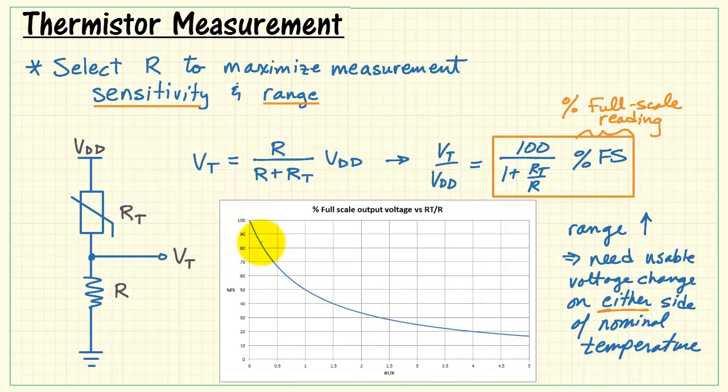As an example, suppose the fixed value resistor is selected to be much larger than the thermistor resistance at its nominal temperature. Well, that gives us this asymmetrical output range, meaning that as the temperature swings back and forth around the nominal temperature, we have a fairly limited range as it tries to go in the colder direction.